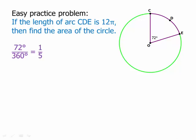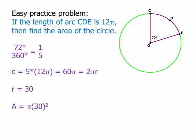That simplifies to one-fifth — a handy fraction to know, that 72 degrees is one-fifth of 360. So we have a fifth of the circle, meaning that arc is one-fifth of the circumference. The circumference must be 5 times 12π, or 60π. And 60π equals 2πr. Here's a key circle strategy: use the information you're given to find the radius, and once you find the radius you can find everything else. Dividing, we get radius equals 30. Then the area equals πr² equals 900π.